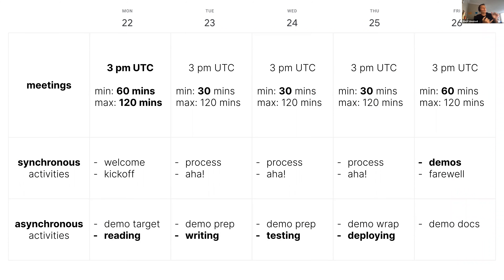This is the schedule for the week. Every single day — today is our first — we're going to have meetings at 3 PM UTC. Mondays are 60 minutes, Fridays are 60 minutes, and every other day is 30 minutes. During these meetings, today is our kickoff and welcome, Friday is our demos and goodbye, and Tuesday, Wednesday, and Thursday we'll talk about process, answer some questions, share some aha moments — 30 minutes to two hours together.